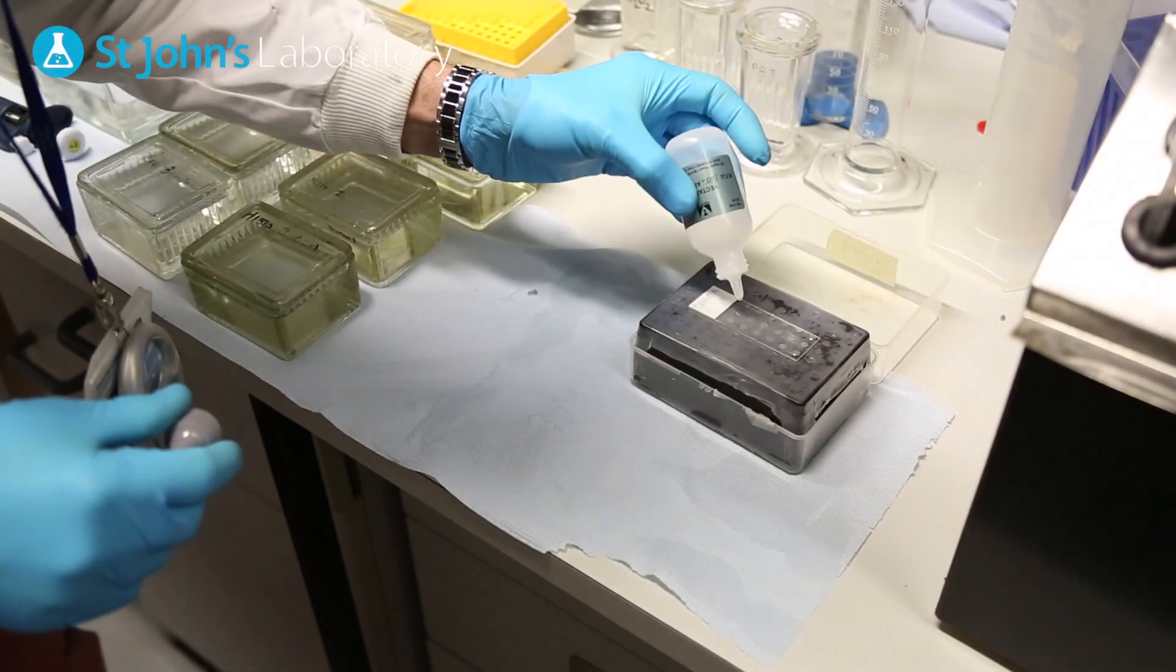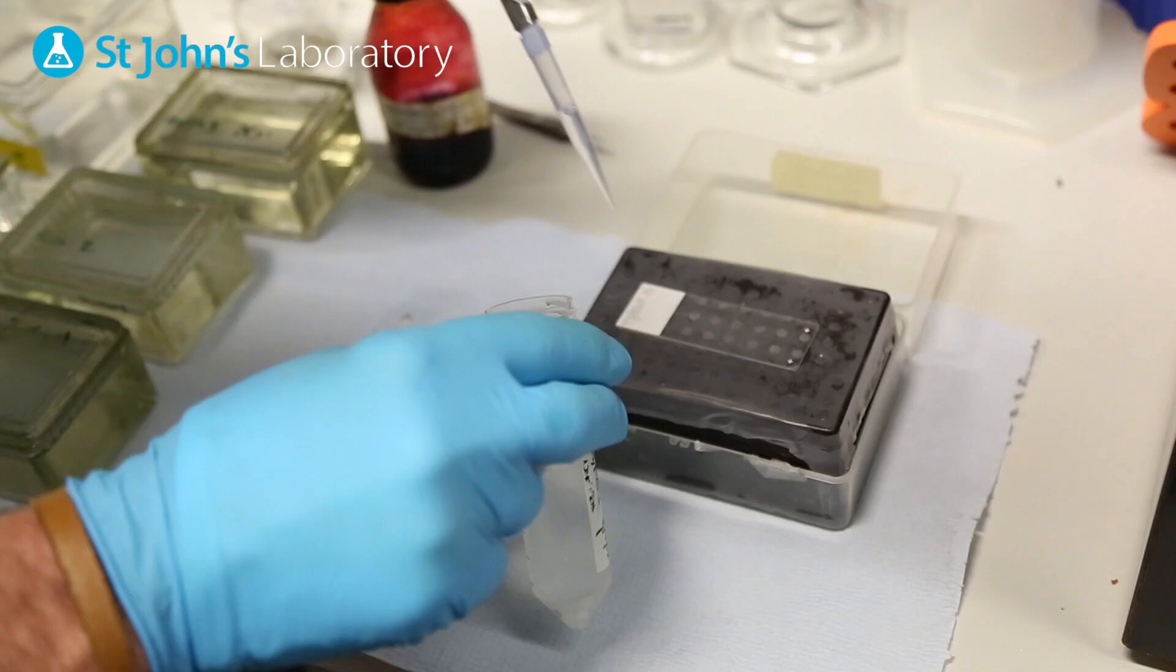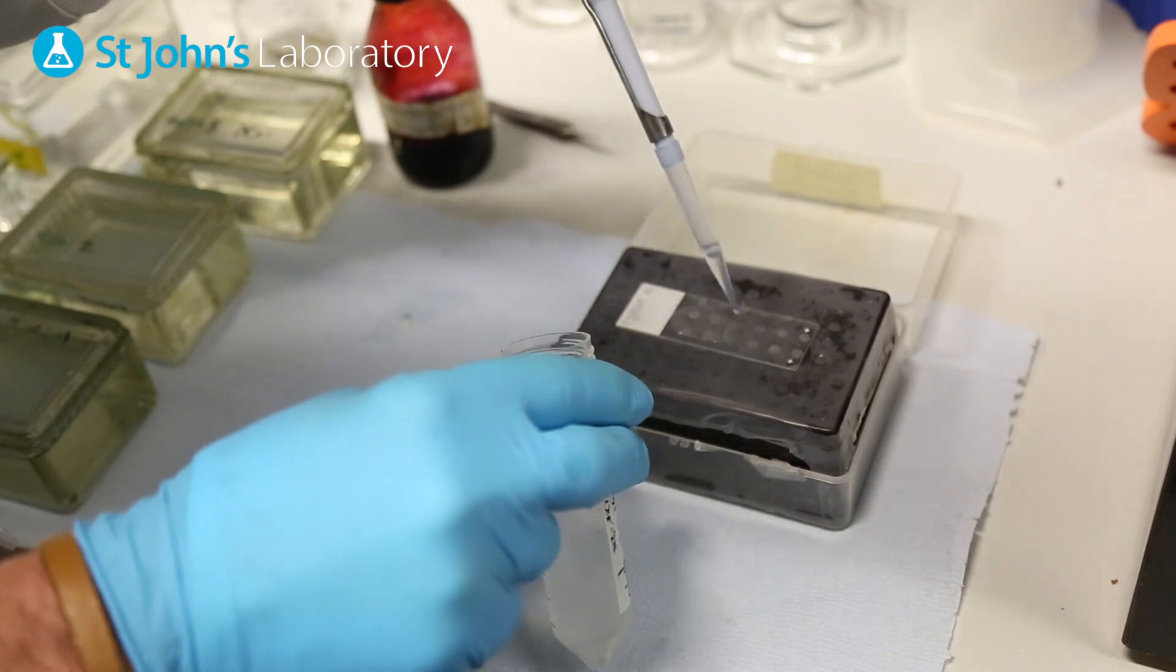The application of an ABC kit allows us to amplify the signal for individual binding sites. After this step, repeat the PBS wash process again.